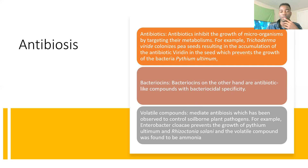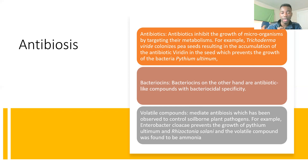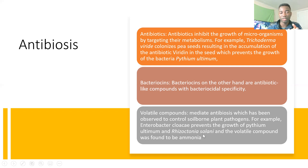Then we go down to volatile compounds. An example of a volatile compound here would be ammonia. These are compounds that mediate antibiosis, which has been observed to control soil-borne pathogens in plants. For example, Enterobacter cloacae prevents the growth of Pythium ultimum and Rhizoctonia solani, with ammonia being the volatile compound involved.